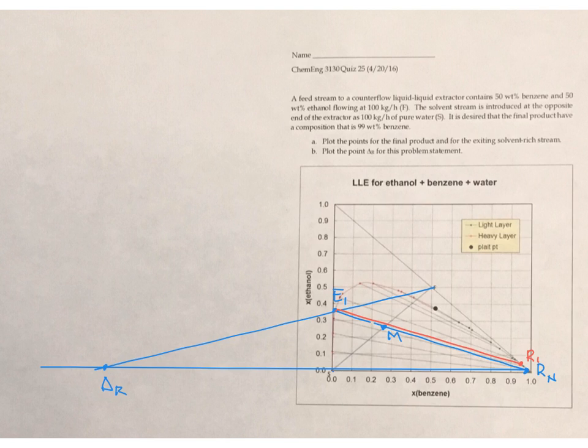and the other side of the tie line is going to be the raffinate on stage one. Now what I know is that the raffinate on stage one also must be in common with this delta R point. Every stage is going to have that as the common point. So I can draw a line from delta R to R1.